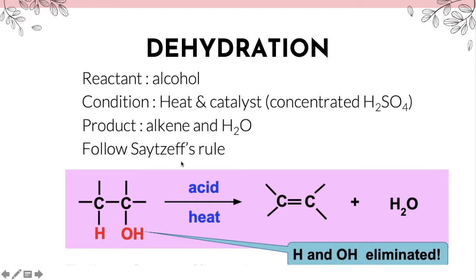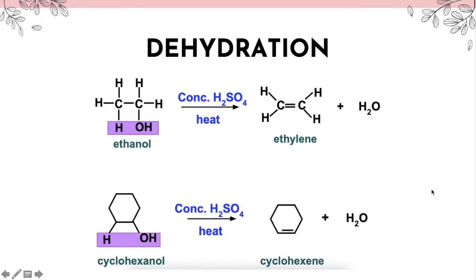The product will be alkene and water. This dehydration process must follow Zaitsev's rule, which states that in an elimination reaction, the most stable alkene formed is the most highly substituted alkene. One H atom is removed from one carbon and the OH group from an adjacent carbon, forming a C double bond C. H₂O is the leaving group. For example, dehydration of ethanol with concentrated sulfuric acid and heat removes one hydrogen atom and one OH group, giving ethylene and water.